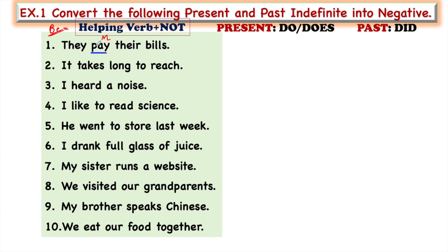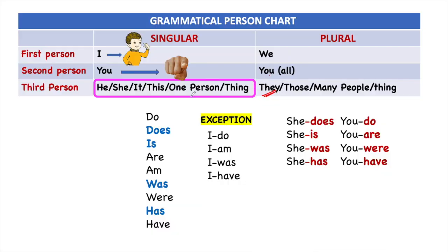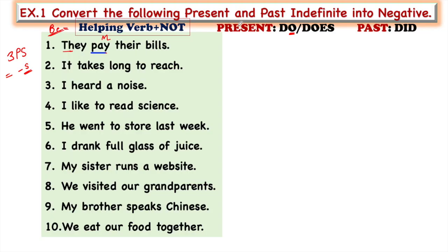In present tense we take the help of 'do' and 'does.' 'They' comes in the category of third person plural, so verbs not ending with S will come — like 'do, are, were, have.' Therefore with 'they' we choose 'do.' So the negative is: 'They do not pay their bills.' The formula is: helping verb plus 'not' plus main verb.